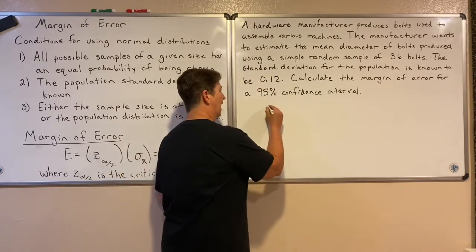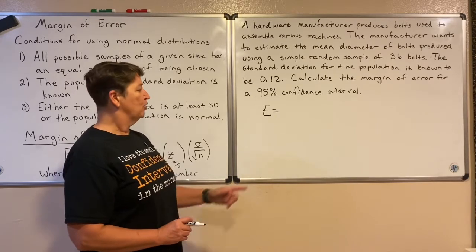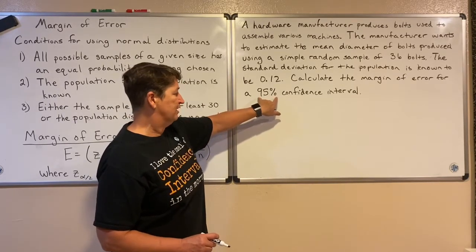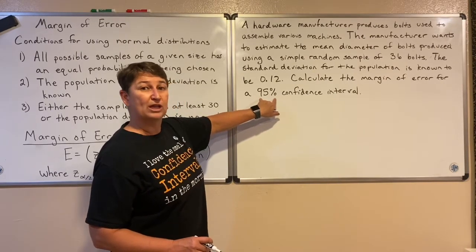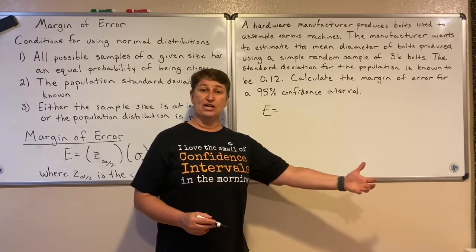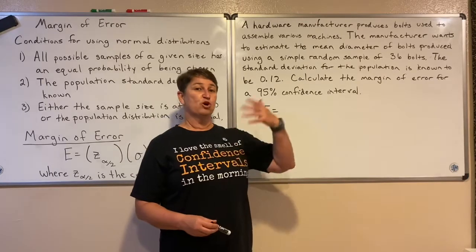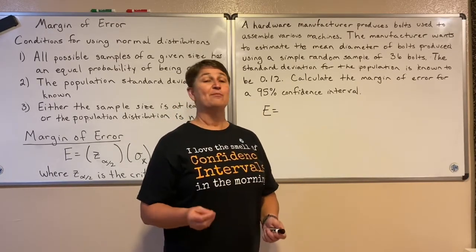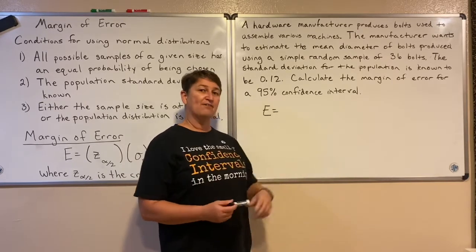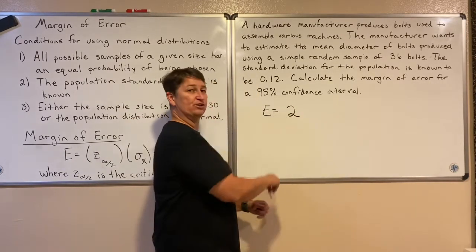To find the margin of error, I take my critical number times my standard deviation. In order to get the critical number, I look at my confidence level. For 95%, the empirical rule tells us that's out two standard deviations, so the critical number is two. There's more precision available — some classes use 1.96 — but we'll use two because the empirical rule tells us 95% is out two standard deviations.